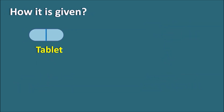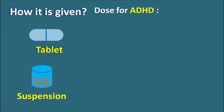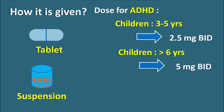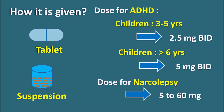Amphetamine is available as tablets, extended-release tablets, and suspension. Dosing depends on the condition. For ADHD in children aged 3 to 5 years, it is given at a low dose of 2.5 mg twice daily, with increases based on clinical response. This drug should not be given to children less than 3 years due to CNS and cardiovascular toxicity. For children greater than 6 years, the dose can be increased to 5 mg twice daily. For narcolepsy, the initial dose ranges from 5 to 60 mg depending on patient condition.